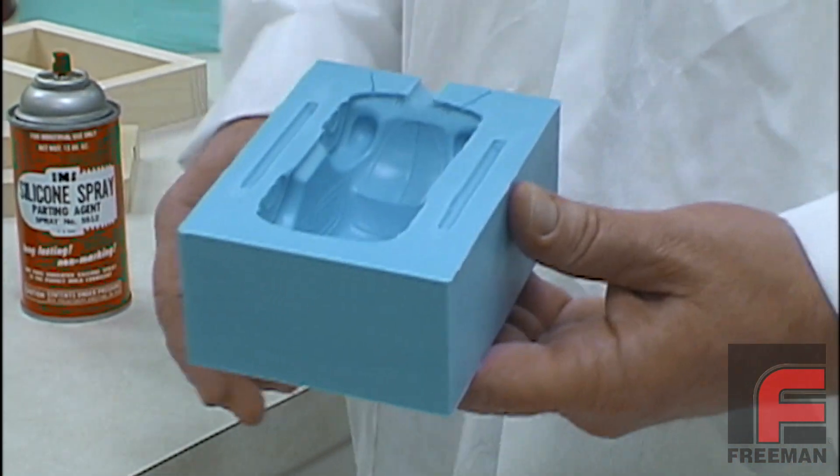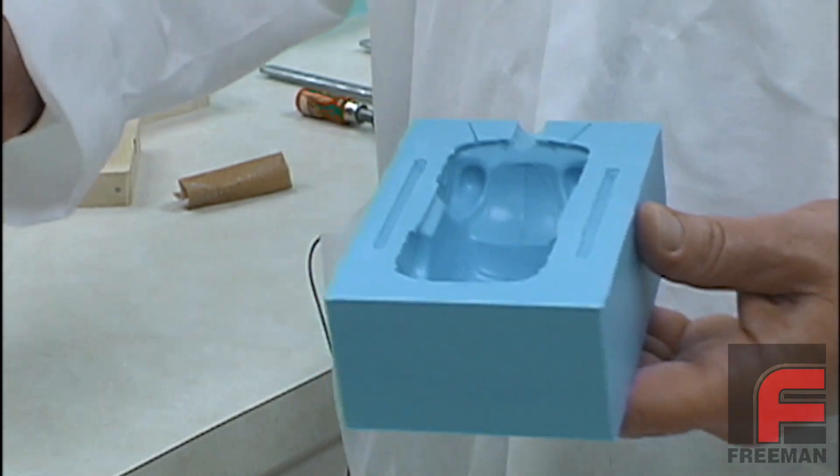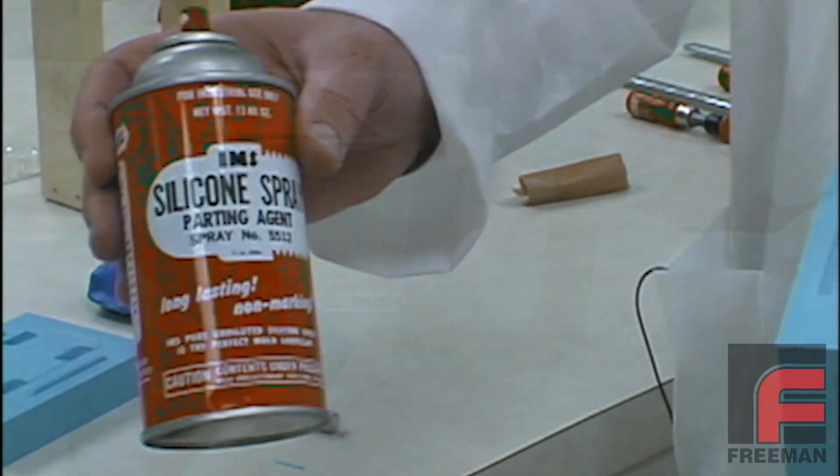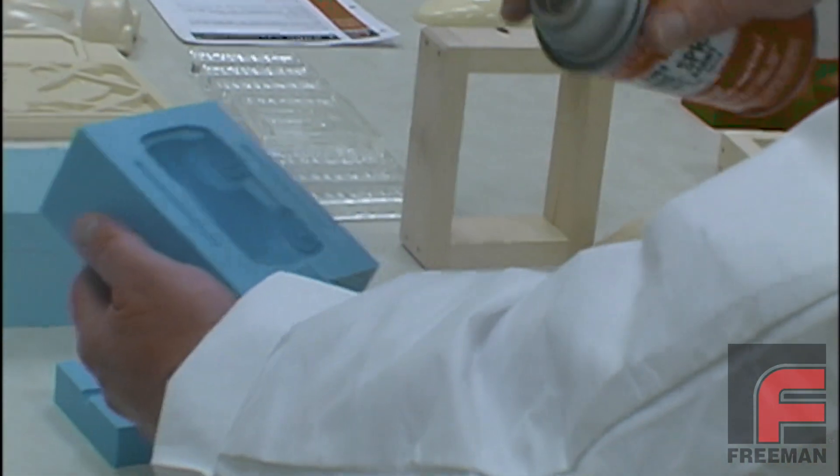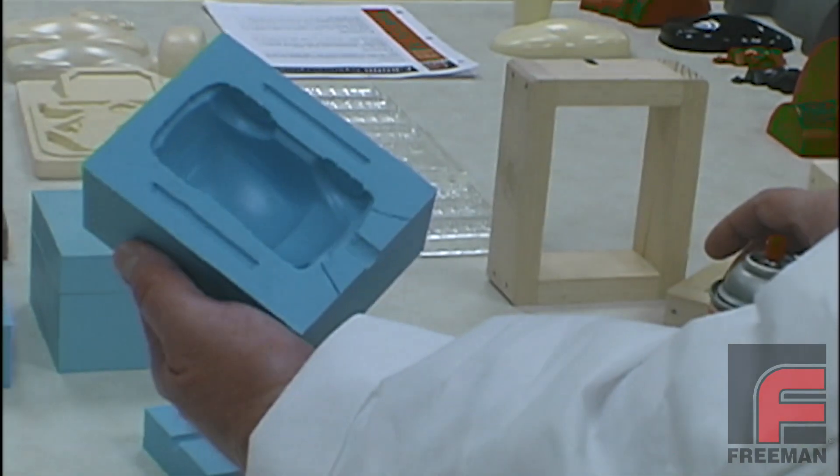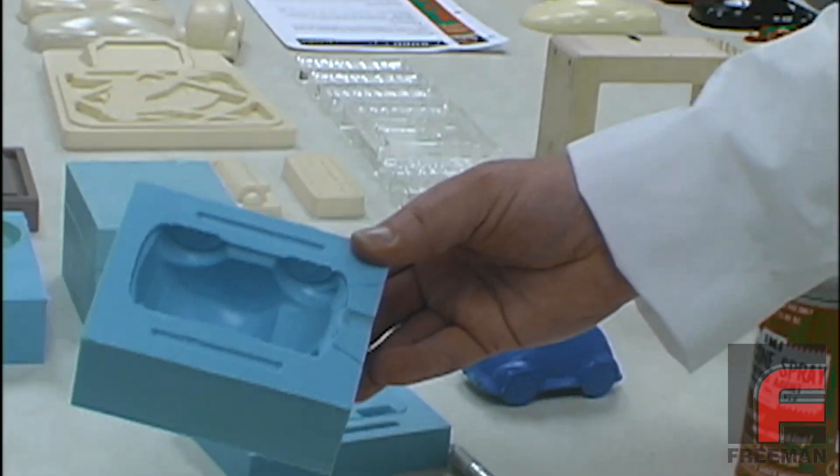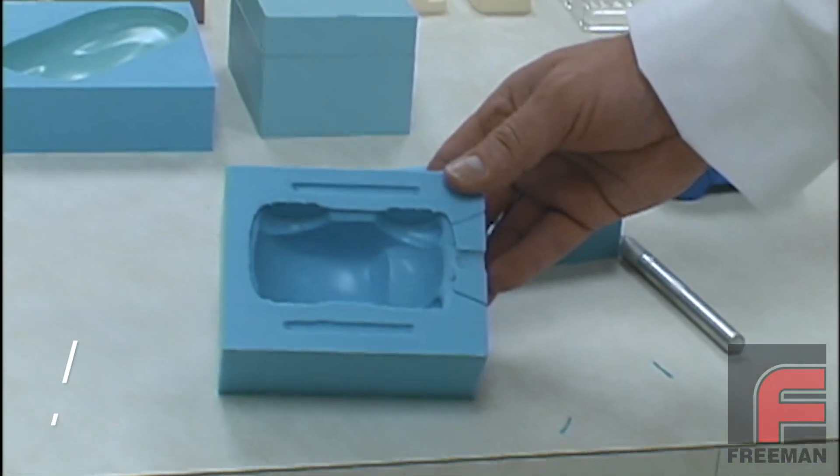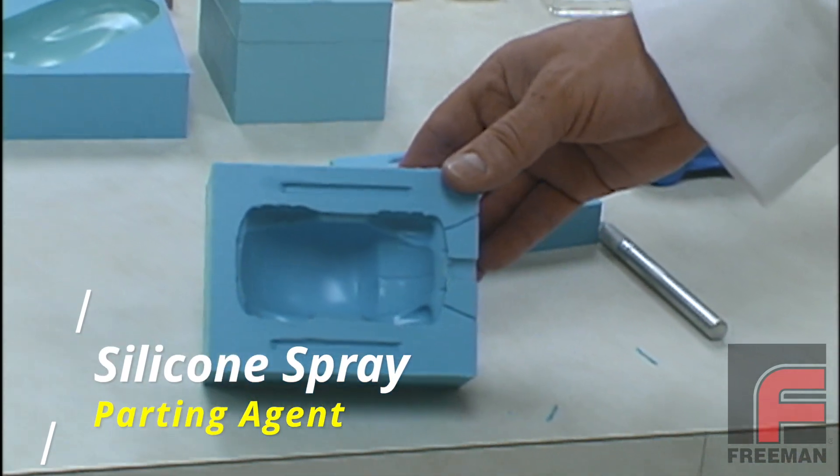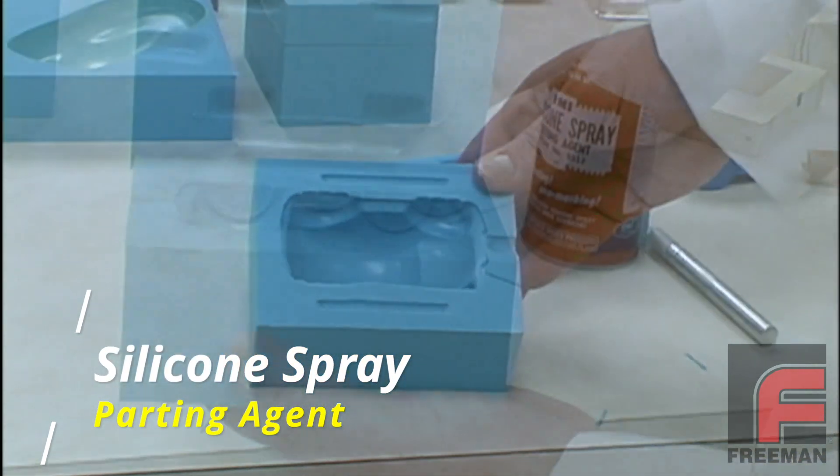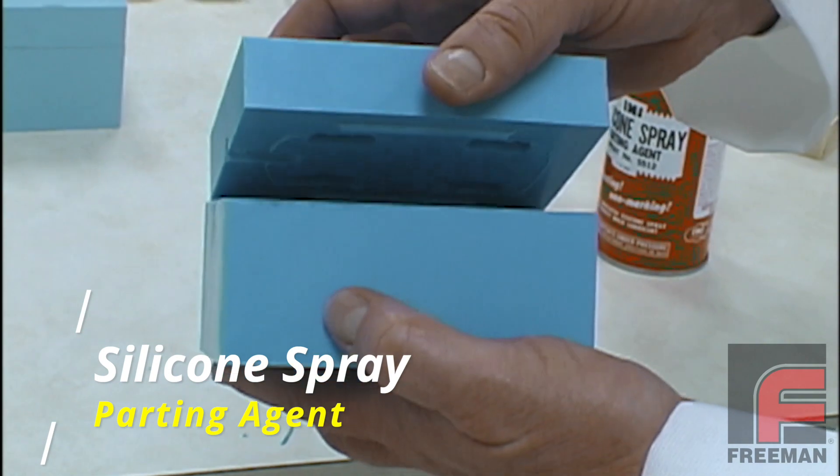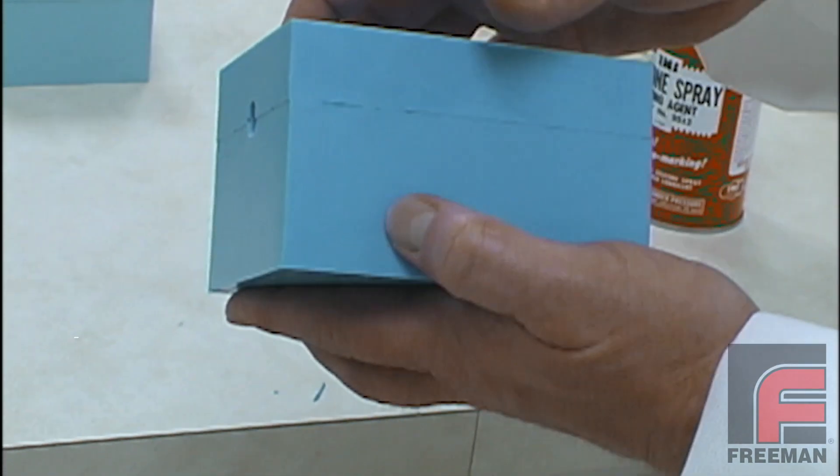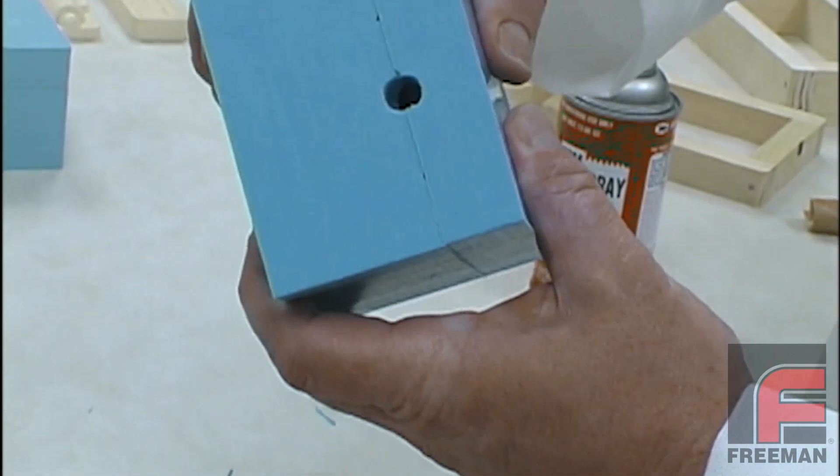Since silicone rubber is self-releasing, it doesn't need a release agent. However, in order to make the demolding process easier and to increase the life of our mold, we're going to apply a light coat of silicone spray parting agent. Notice how it gives the mold a higher shine as well. Now we're ready to put the two halves together, and since we've built in the locking mechanism, it aligns perfectly.